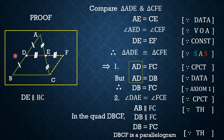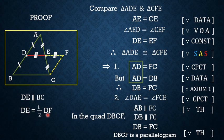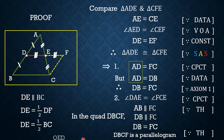Therefore DE is parallel to BC, because in a parallelogram the opposite sides are parallel — this is point number 1. For the length: by construction DE is half of DF, and DF equals BC in the parallelogram. Therefore DE equals half of BC. This completes the proof of the midpoint theorem — a very, very important theorem.